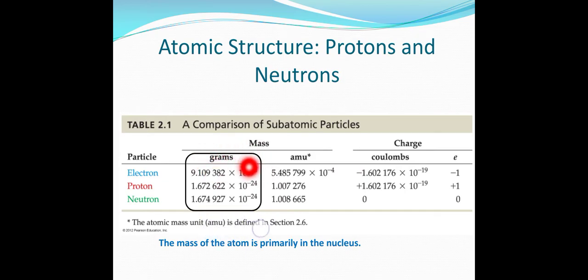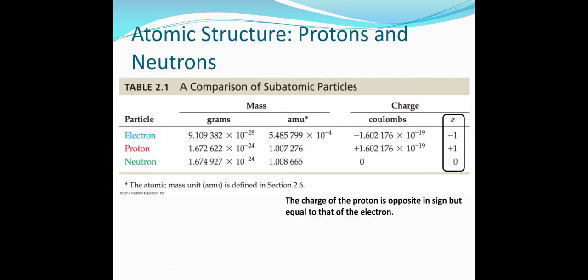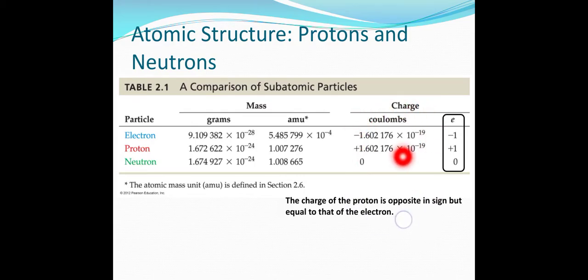The masses and charges of electrons, protons, and neutrons are given in grams, amu, and coulombs. The electron has a charge of −1, the proton has a charge of +1, and the neutron is neutral. The mass of the atom is primarily in the nucleus. The charge of the proton is opposite in sign but equal in magnitude to that of the electron.